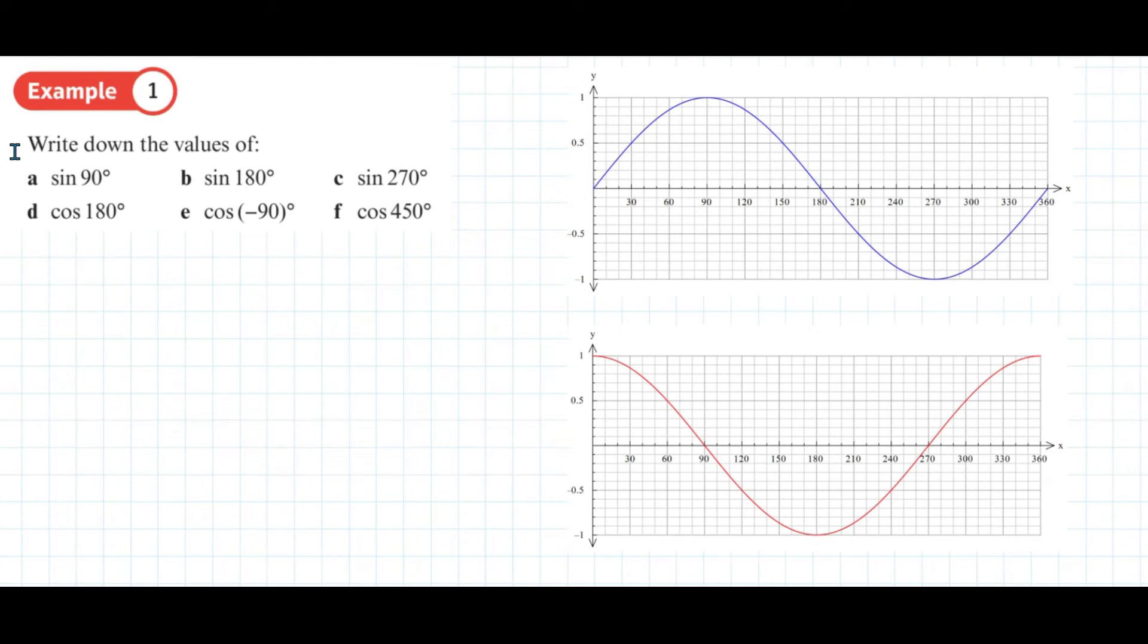This is example one from page 204 of the year one textbook. It says write down the values of - we've got some sines to work out and some cosines to work out.